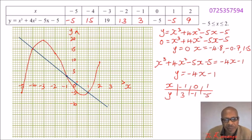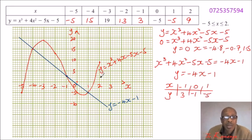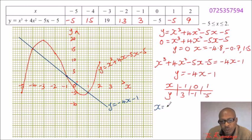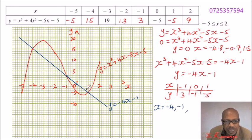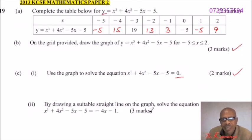Here is the straight line graph. Always remember to label your graphs — this line is y equals minus 4x minus 1, and the curve is y equals x cubed plus 4x squared minus 5x minus 5. To solve the equation, read the values of x where the two graphs intersect. The intersection points give x equals minus 4, x equals minus 1, and x equals 1. These are the values that satisfy the equation, and doing this correctly gives you 3 marks.